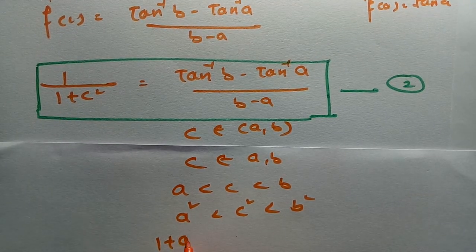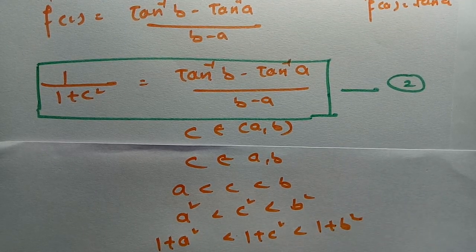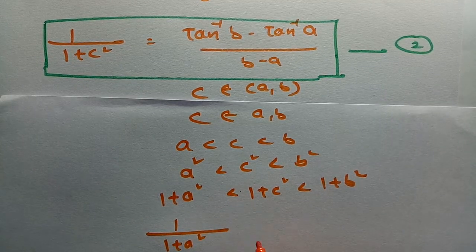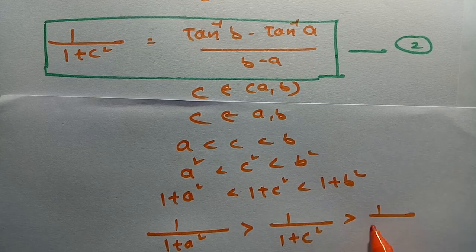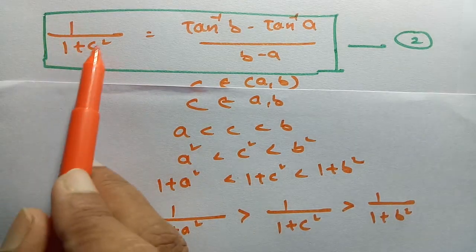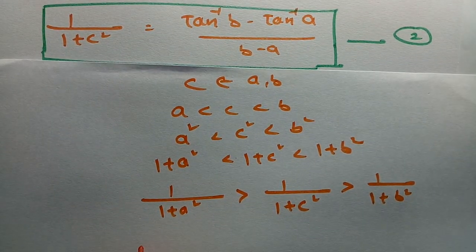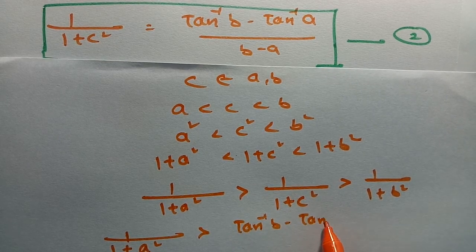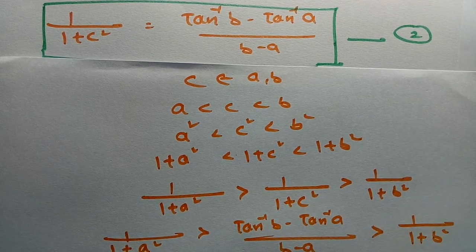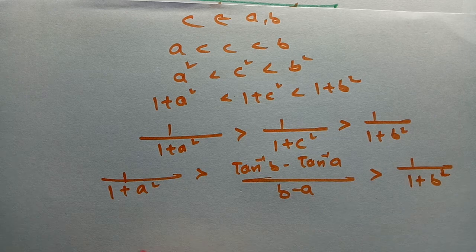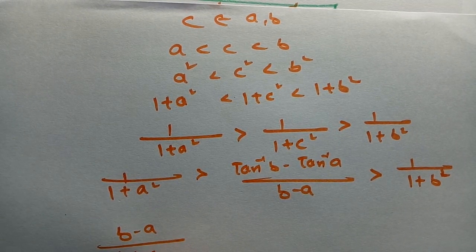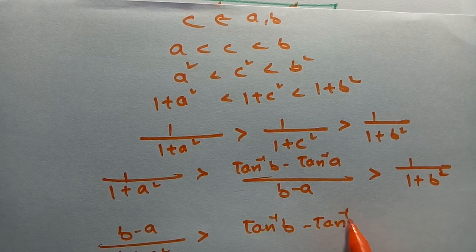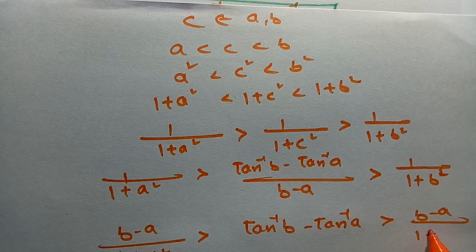Adding 1 gives: 1 + a² < 1 + c² < 1 + b². Taking the reciprocal, the inequality reverses: 1/(1+a²) > 1/(1+c²) > 1/(1+b²). From equation 2, substituting the value of 1/(1+c²) as [tan⁻¹(b) - tan⁻¹(a)]/(b-a), we get: 1/(1+a²) > [tan⁻¹(b) - tan⁻¹(a)]/(b-a) > 1/(1+b²). Multiplying throughout by (b-a) gives the required inequality.